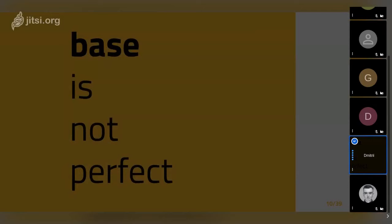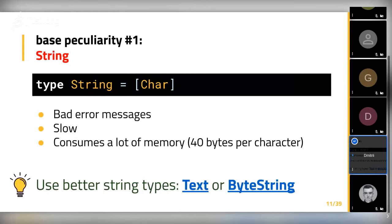Unfortunately, base is not perfect — it has some pitfalls. The first and most popular problem is the String type, which is defined in base as a list of characters. This definition has its advantages but also severe drawbacks. For example, it provides poor error messages: if you pass a Maybe Integer instead of a String, you'll see error messages mentioning character types you haven't even worked with. You'll see really confusing error messages and spend more time understanding what's happening.